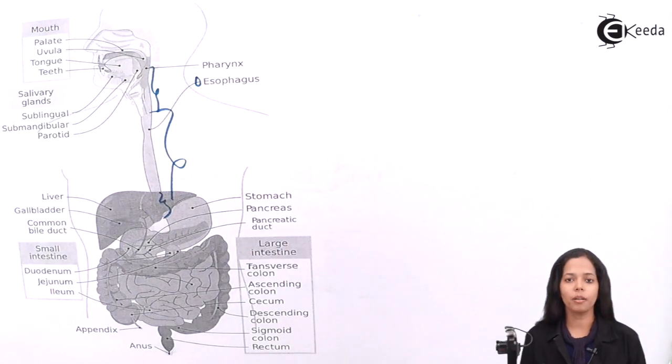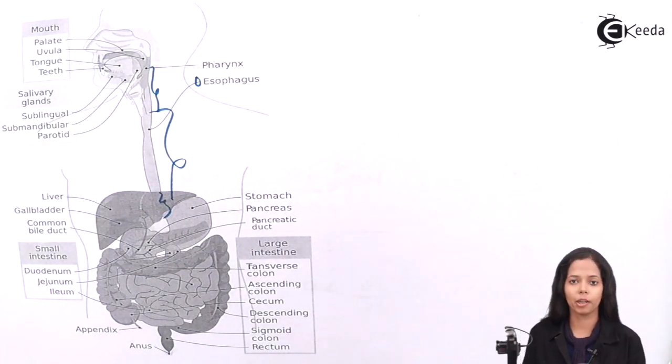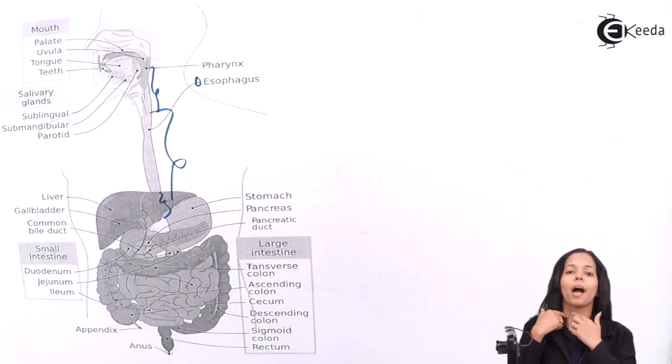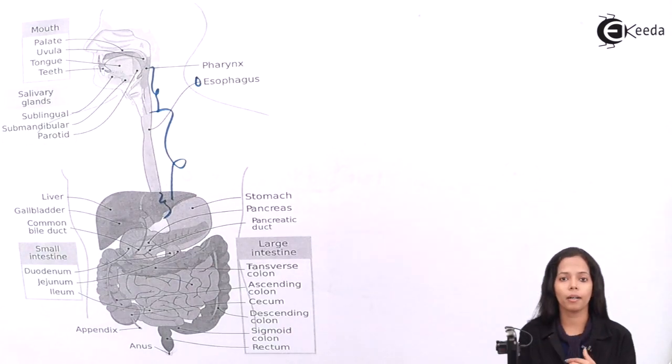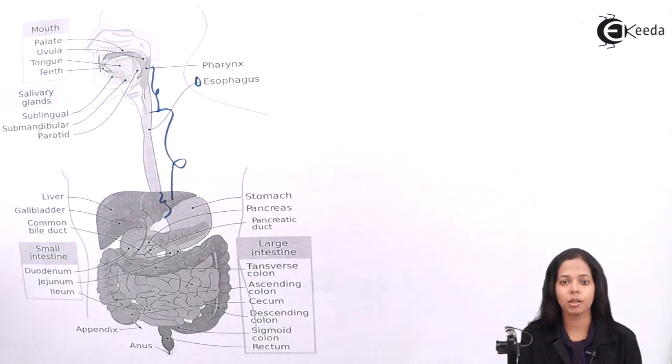Now speaking about esophagus location, the esophagus is located behind the trachea and heart. So it moves behind the trachea and heart and goes into the abdominal cavity through the diaphragm. So this is all about esophagus description.